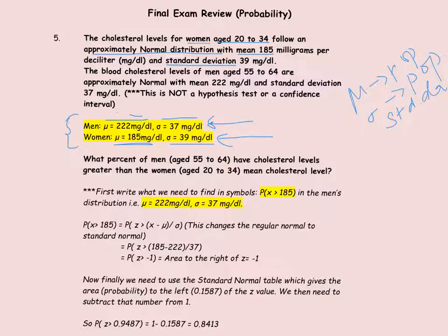Now let's read the question. It says: what percent of men? The minute the question refers to what percent of men, and specifically referring to men, remember that the mu and sigma we're going to use for this problem are the ones from the men's distribution. So that would be mu equals 222 milligrams per deciliter and sigma is 37 milligrams per deciliter. So what percent of men — let's see what we need to figure out. P for percent or probability, cholesterol levels, so x is the variable which is the cholesterol level.